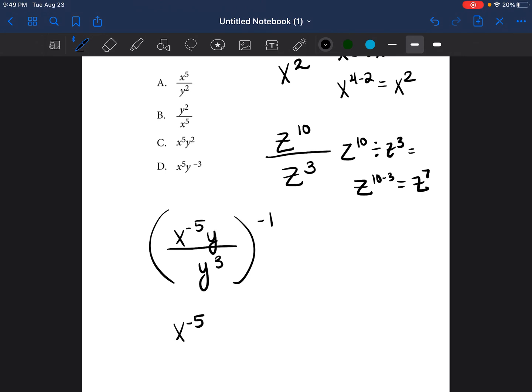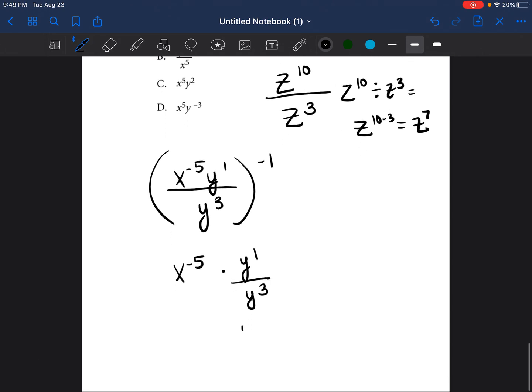But we do have y to the first power divided by y to the third power. That's the same as saying y to the first divided by y to the third. You just subtract the exponents, so it's y 1 minus 3, which equals y to the negative two power. So we bring down the x to the negative fifth power and write next to it y to the negative two power. Put it back in the parentheses and make sure we put that negative one on the outside.